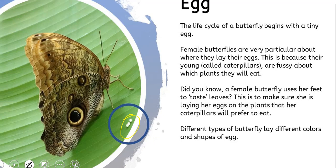If the caterpillars don't eat the leaves, they won't have any food, and without food they'll die. So it's important that she gives them the best chance of life. She lays her eggs on a leaf of a plant where the caterpillars will actually eat.